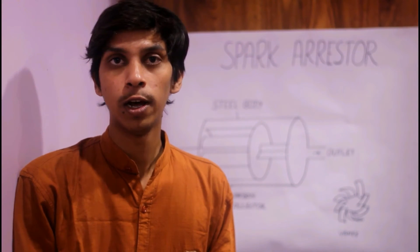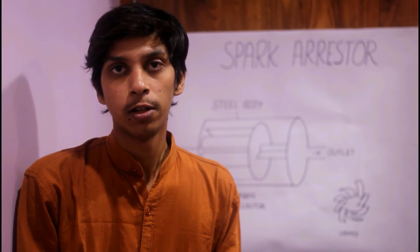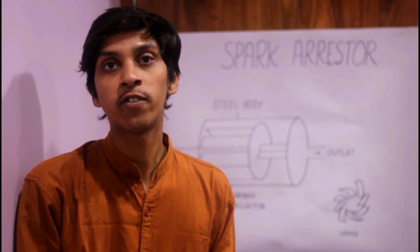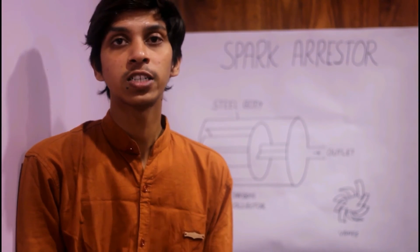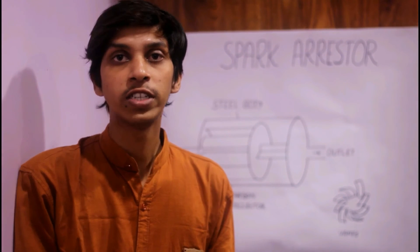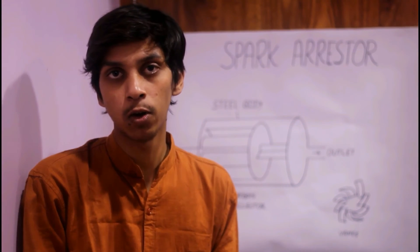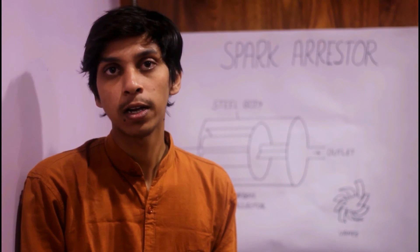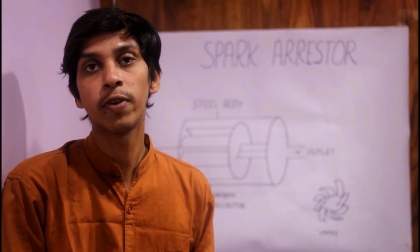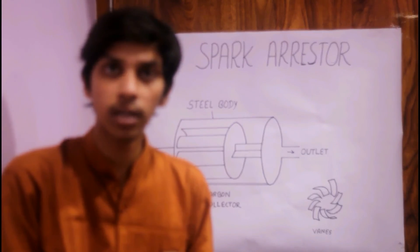If you want to learn more about the spark arrester, you can look at the spark arrester in front of every STV after the muffler. Because the spark arrester is used in tanker vehicles which carry petroleum, and if the spark comes out from the front of the vehicle, the risk is very less. That's why we use the spark arrester in the front of the vehicle.